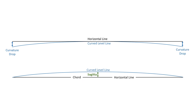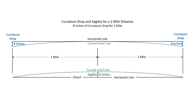Now I'm going to change how we measure curvature drop — from the example above where it's measured at each end, to the example below where the curved level line is above the horizontal line, and I'll be measuring the sagitta. Up above we have a two-mile curved level line with eight inches of curvature drop on each end, and down below that curved level line is above the horizontal, so the sagitta is now eight inches.